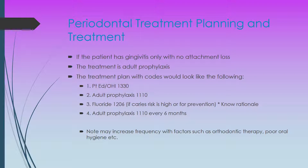For a patient with gingivitis only and no attachment loss, the treatment is going to be an adult prophylaxis. The treatment plan would look like the following: one, patient education and oral hygiene instruction — code 1330; two, adult prophylaxis — code 1110; three, fluoride, only if their caries risk is high or for prevention — you must always know your rationale. Finally, the recall: the adult prophylaxis, code 1110, every six months. Be mindful we may have to increase this frequency if the patient is on orthodontic therapy or has poor oral hygiene.